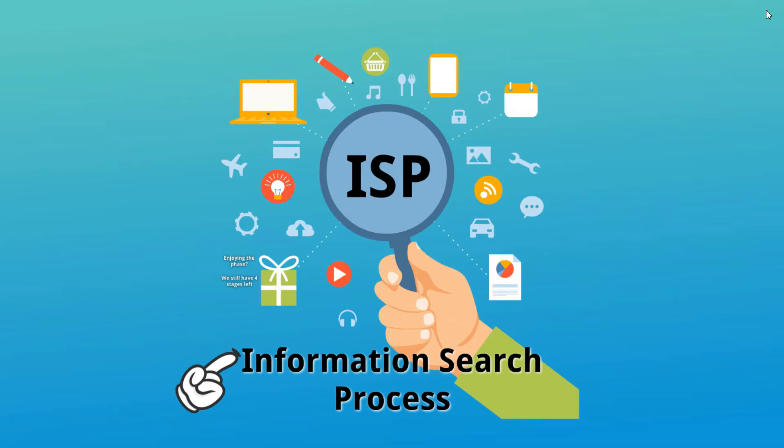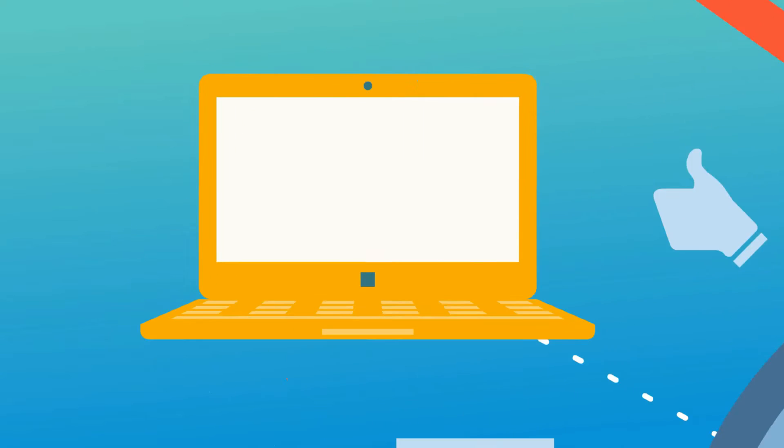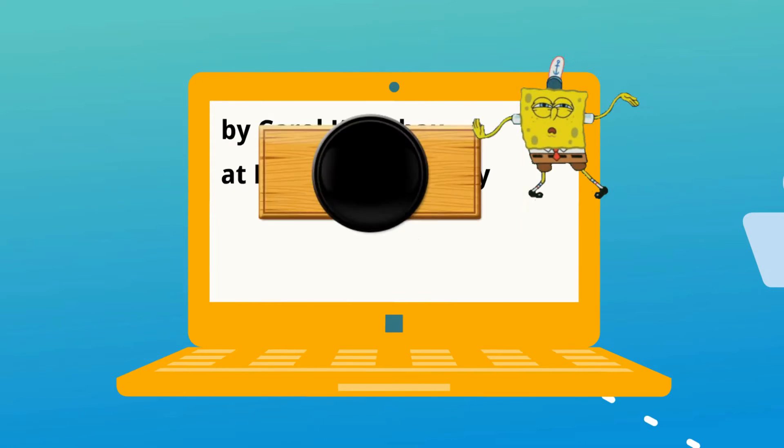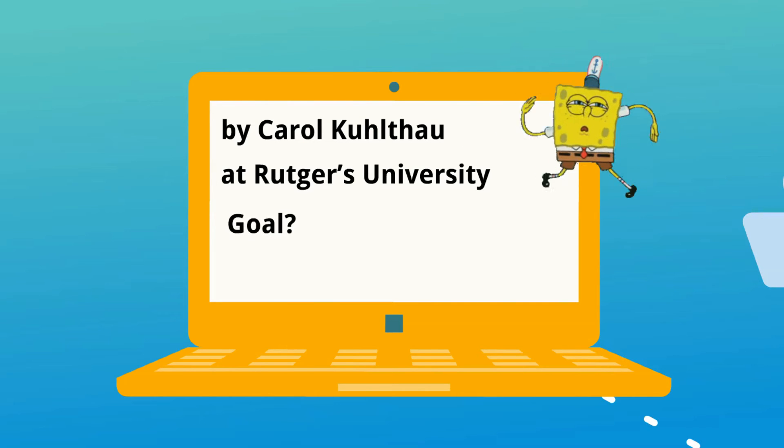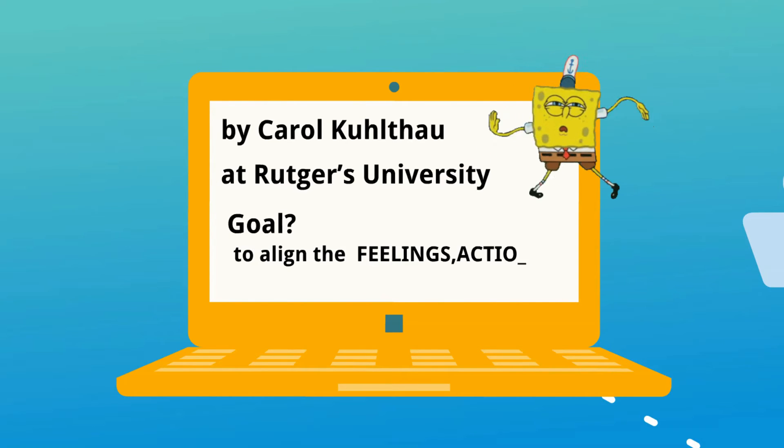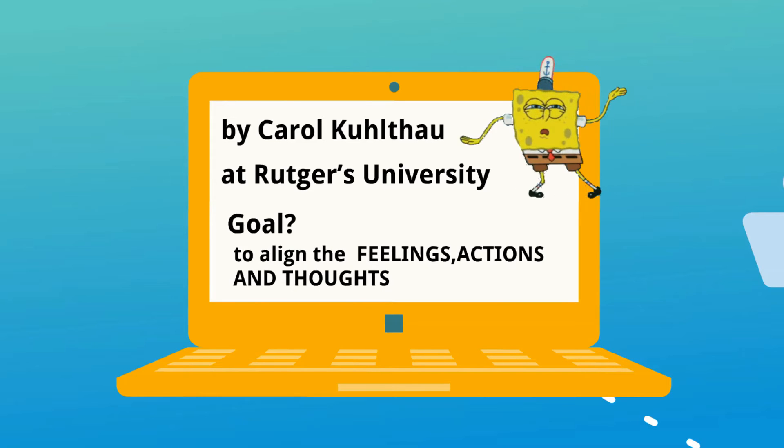But before we proceed to a deeper understanding of ISP, let us first have a brief history. The ISP model was developed by Carol Kuhlthau at Rutgers University with what goal? To align the feelings, actions, and thoughts that students experience as they engage with the various stages of the research process. Kuhlthau has since done many studies and found people all their lives go through the same process and tasks and feelings while they are searching for and dealing with new information.